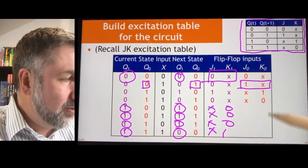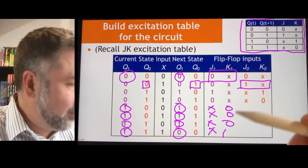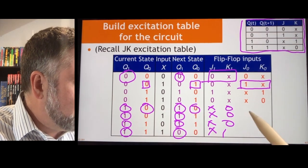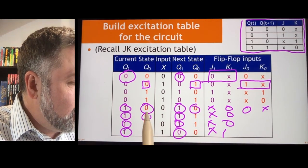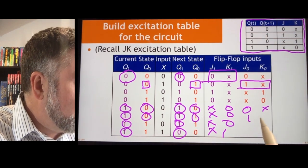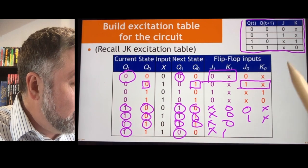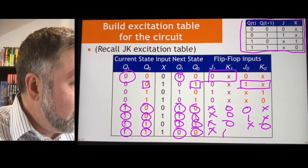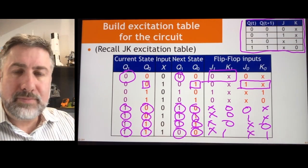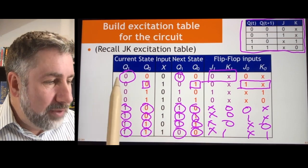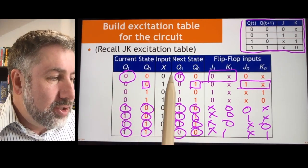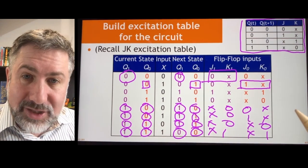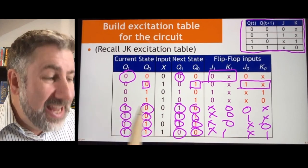For the Q0 flip-flop, I fill in these entries as well. A 0-to-0 transition is J=0, K=don't care. A 0-to-1 is J=1, K=don't care. A 1-to-1 is don't care and 0. A 1-to-0 is don't care and 1. This takes some time because you have to look at every possible state transition pair for each state variable and decide what inputs to provide to the JK flip-flop to make that transition happen.